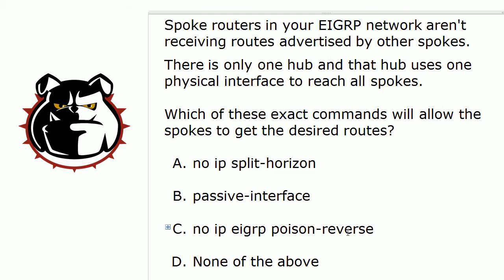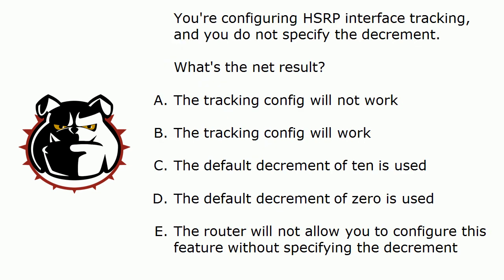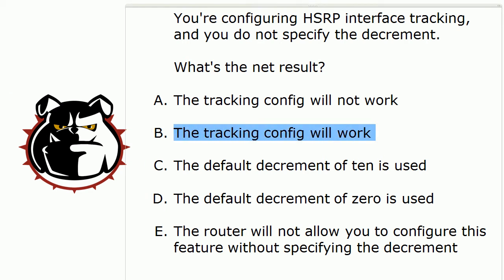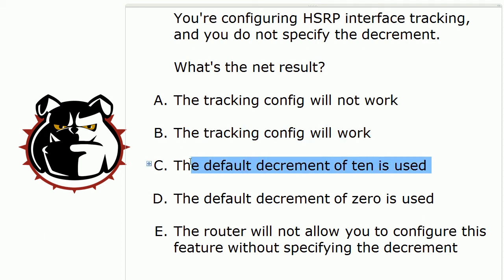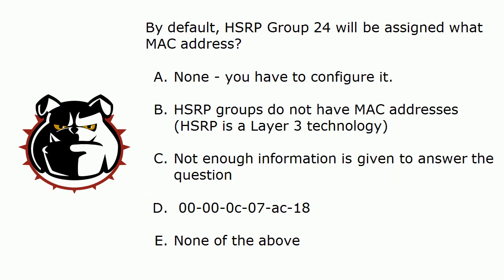With HSRP interface tracking, this is definitely a feature you've got to be very familiar with for your Switch and T-shoot exams. The net result is B — the tracking config will work — because you don't have to specify the decrement. The other correct answer is C: the default decrement of 10 is used. You can optionally change that, but if you don't specify it, it will work and use the default decrement of 10.